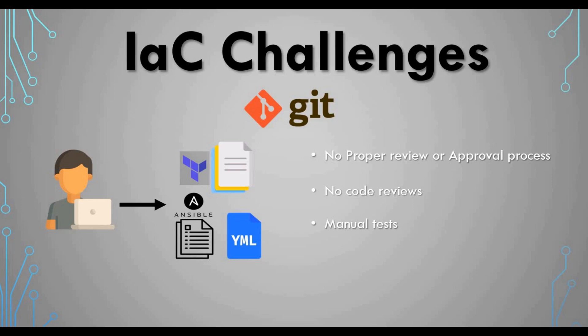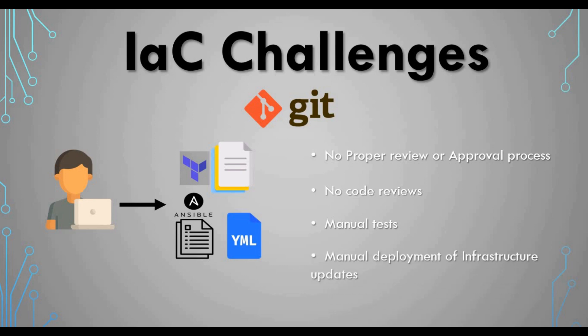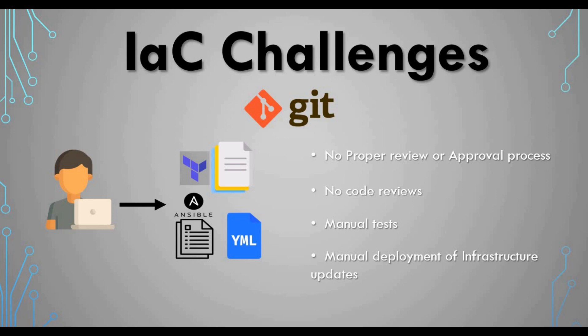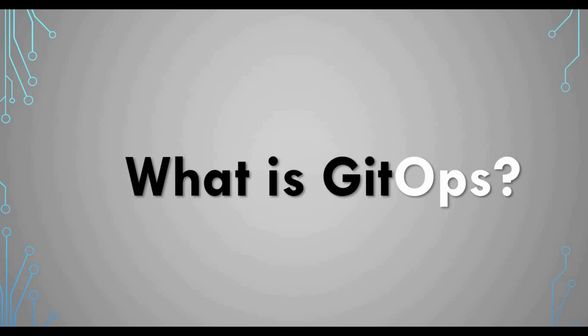There are also no proper tests to make sure the configuration file gives you the right infrastructure. Sometimes there are no tests at all, or only manual tests. The deployment of your infrastructure is also done manually — you run commands like 'kubectl apply' or 'terraform apply' manually as part of your normal process. This is where the topic of GitOps comes in.